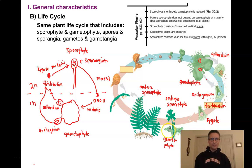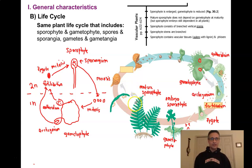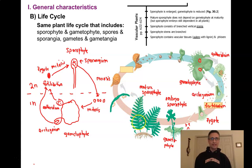Our gametophyte is nurturing the sporophyte, but it's getting crinkly and eventually going to die. Unlike what we saw in our non-vascular plants, we have a mature sporophyte that's capable of living independently of the gametophyte. So the gametophyte eventually dies, the sporophyte gets much, much bigger, and this mature sporophyte is now probably what most people would recognize as a fern.